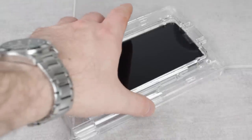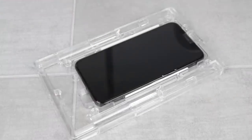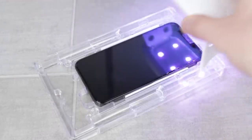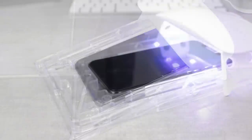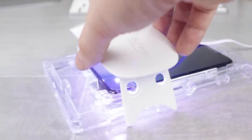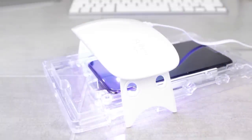Now simply remove the top section of the installation tray like so, before then curing the top part of the protector for around 15 seconds with the UV light. Once complete, move the UV light down to the bottom section of the protector for another 15 seconds.